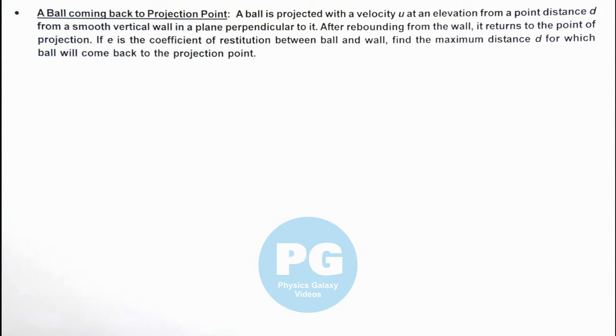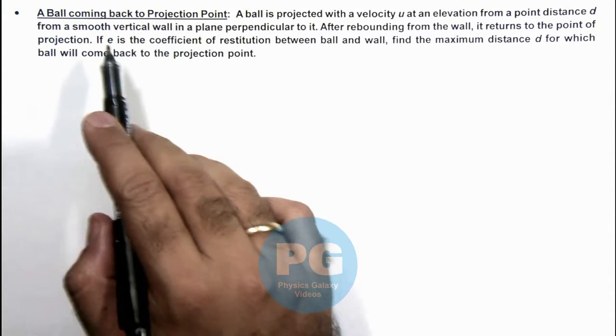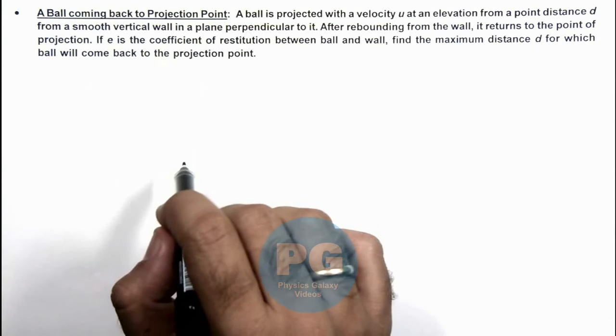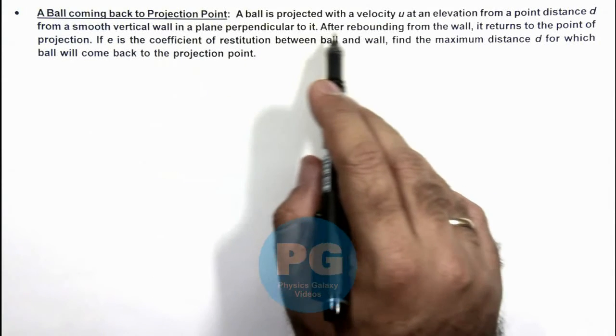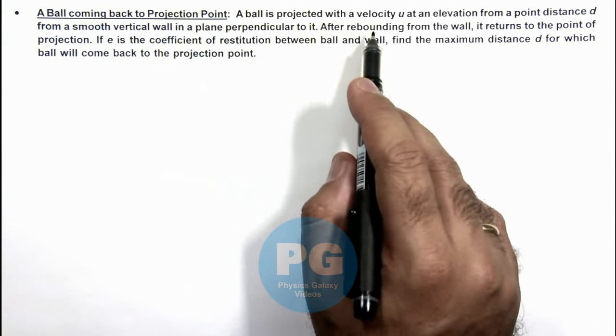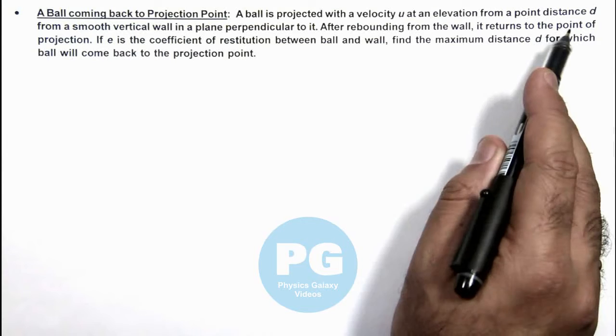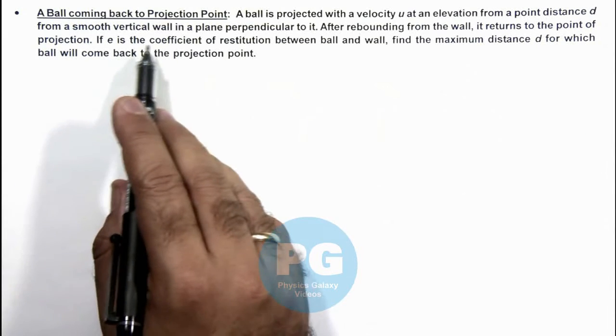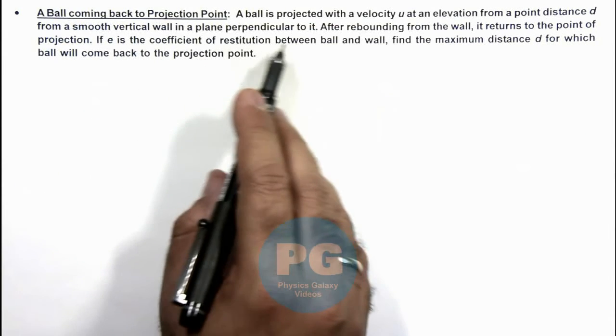In this illustration, we'll analyze a ball coming back to the projection point. Here we are given that a ball is projected with a velocity u at an elevation from a point distance d from a smooth vertical wall in a plane perpendicular to it.